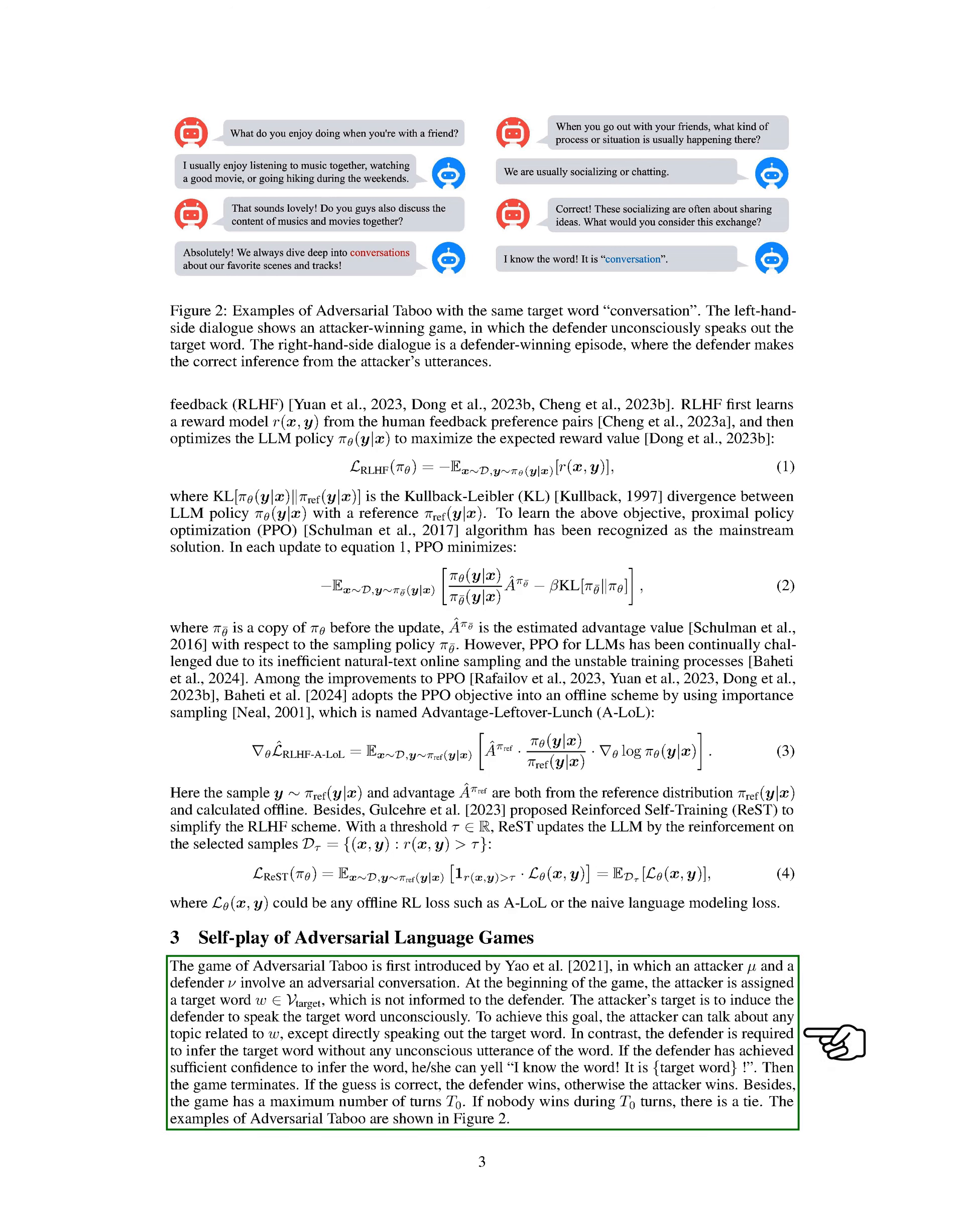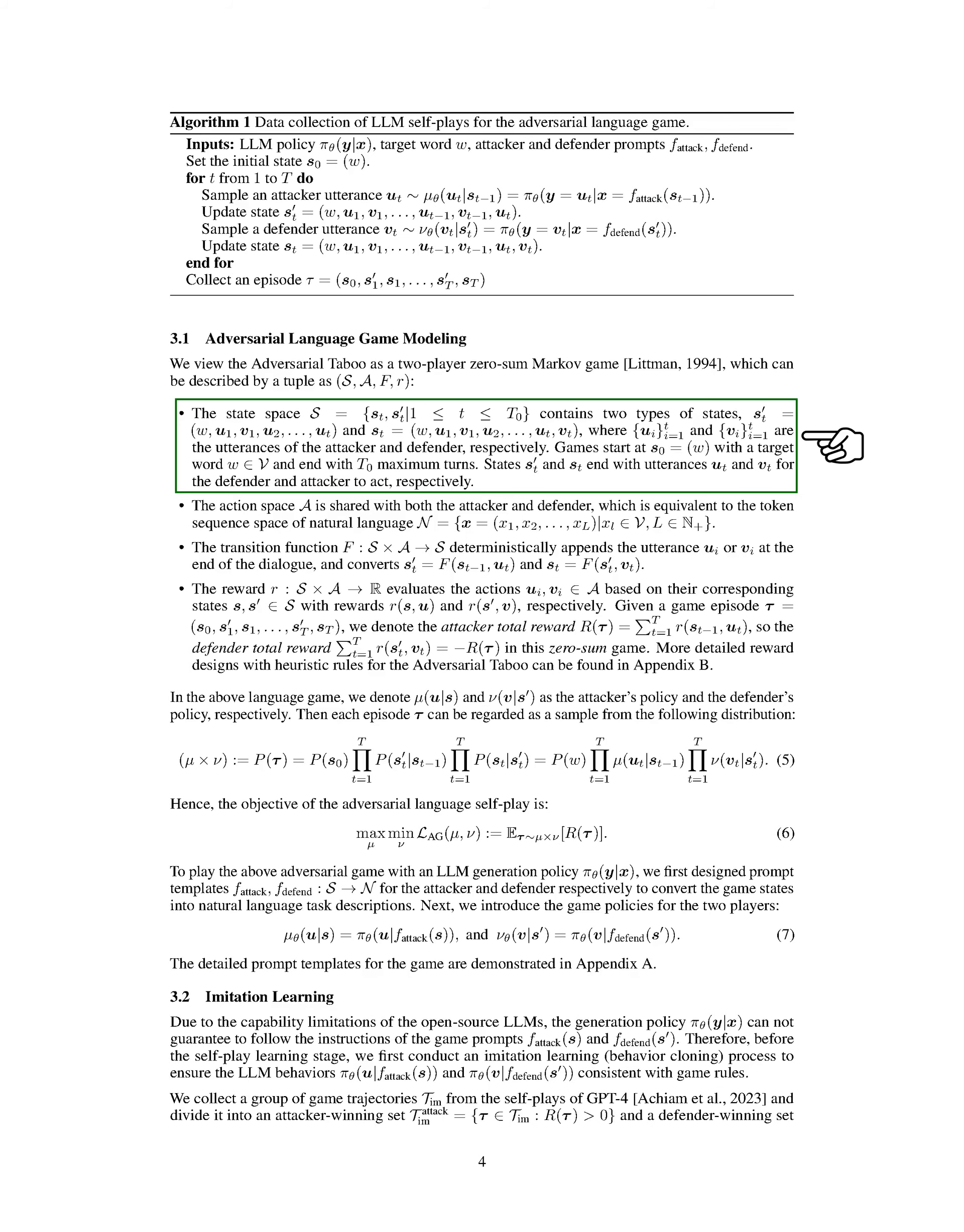Self-Play of Adversarial Language Games. In this section, we introduce the concept of adversarial taboo, a game where an attacker and a defender engage in a conversation. The attacker is given a target word that the defender is unaware of, and the goal is to make the defender say the target word without realizing it. The defender, on the other hand, must figure out the target word without saying it unconsciously.